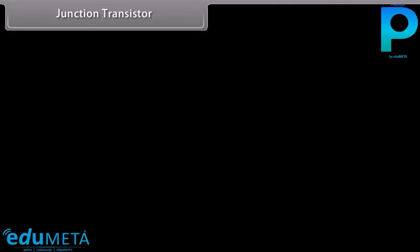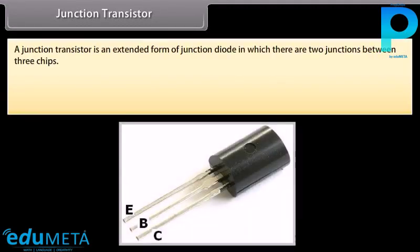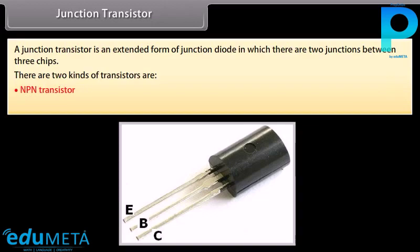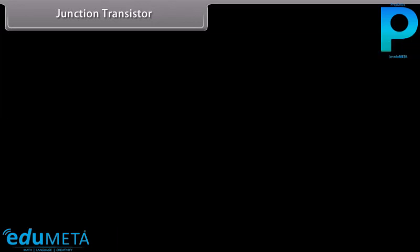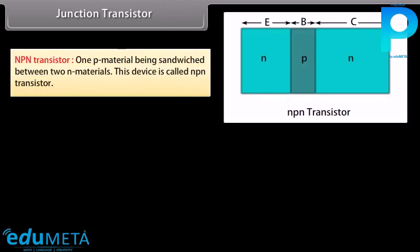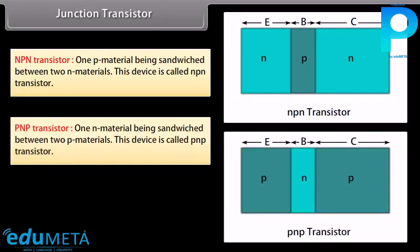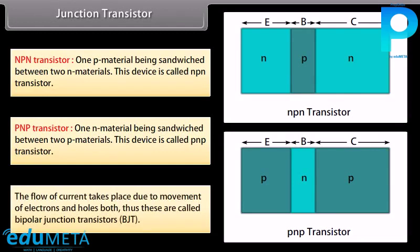A junction transistor is an extended form of junction diode in which there are two junctions between three chips. There are two kinds of transistors: NPN transistor, where one P material is sandwiched between two N materials, and PNP transistor. The flow of current takes place due to movement of both electrons and holes, so these are called bipolar junction transistors.